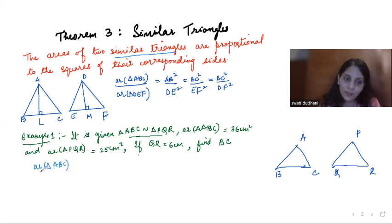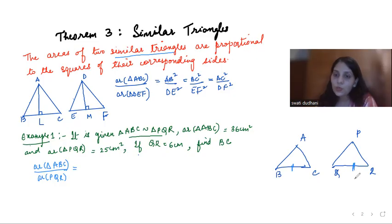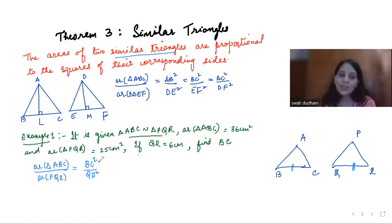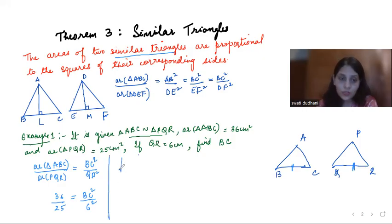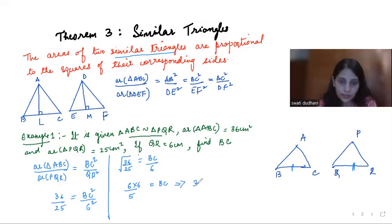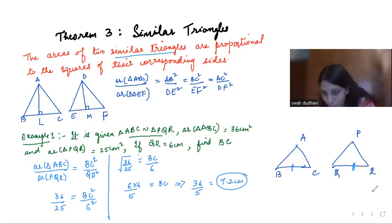Using the theorem we can write: area of triangle ABC by area of triangle PQR is equal to BC² by QR², since BC corresponds to QR. Inputting the values: 36 by 25 equals BC² by 6². Taking the square root on both sides: root(36/25) equals BC/6, so 6/5 equals BC/6. Multiplying across: BC equals 36/5, which is 7.2 centimeters. It was a direct question.